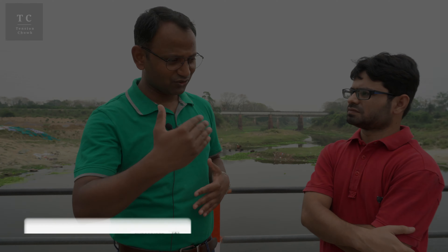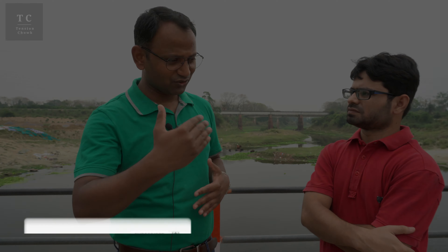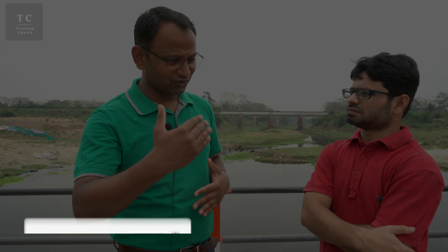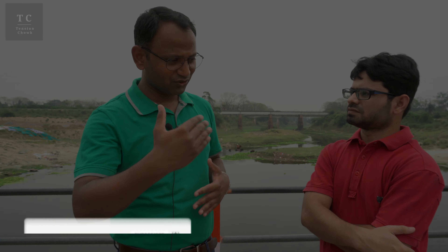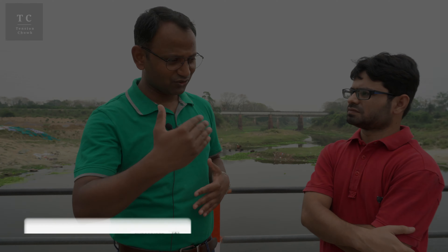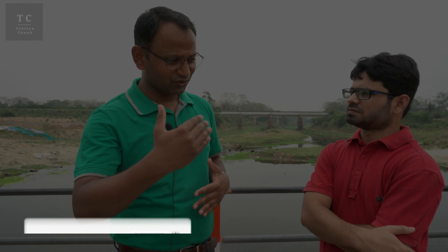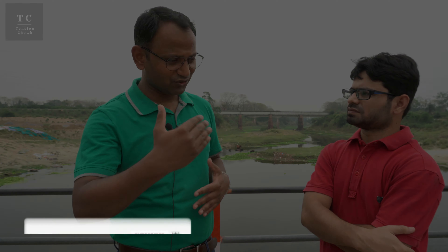Coming to the LAC — the Line of Actual Control — it is also based on perception, with no physical boundary; it is essentially an imaginary line. China believes the LAC is five kilometers from a certain point, whereas India says the LAC is at a different location entirely.